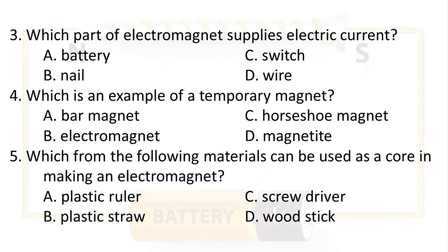Question 3: Which part of an electromagnet supplies electric current? A. Battery. B. Nail. C. Switch. D. Wire. Question 4: Which is an example of a temporary magnet? A. Bar magnet. B. Electromagnet. C. Horseshoe magnet. D. Magnetite.